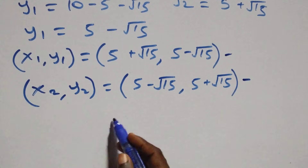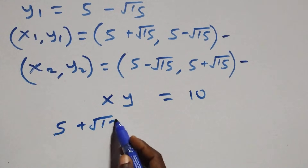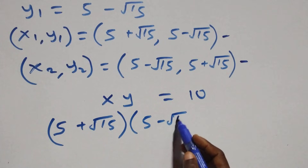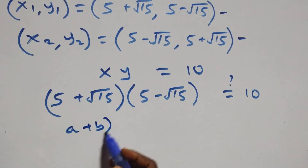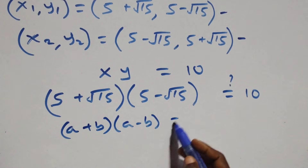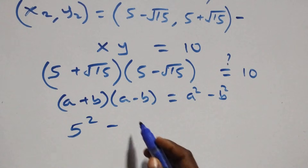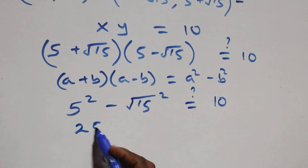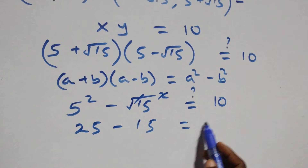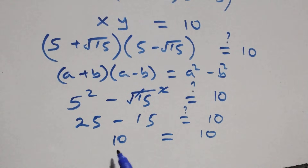For equation 2, x times y equals to 10: we substitute x as 5 plus root 15 and y as 5 minus root 15. Using the identity (a plus b)(a minus b) equals a squared minus b squared, where a equals 5 and b equals root 15, this gives 5 squared minus (root 15) squared, which is 25 minus 15, that's 10. Left hand side equals right hand side.